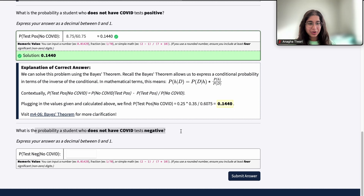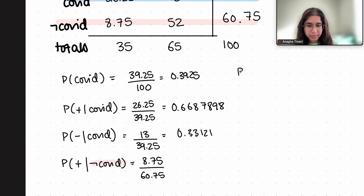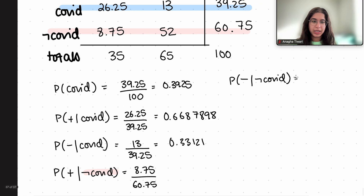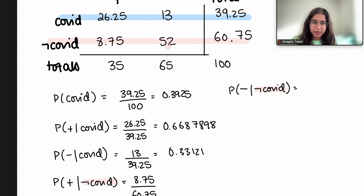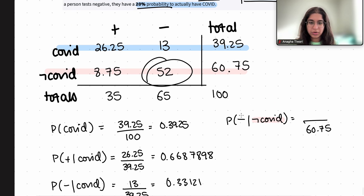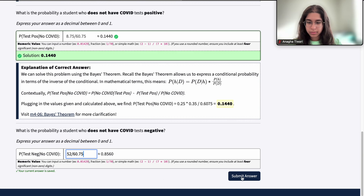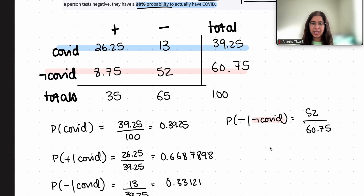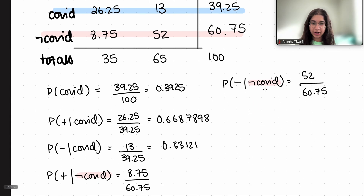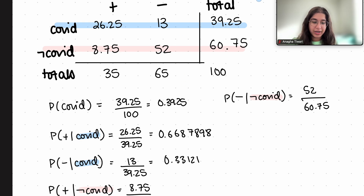Finally, what is the probability that a student who does not have COVID tests negative? That's P(negative | not COVID). Out of the 60.75 people who do not have COVID, 52 of them tested negative, so that's our final probability. As you can see, with the table it's pretty easy to find these probabilities — you just have to be careful about which subset of the total you're dealing with and whether there's a condition involved.